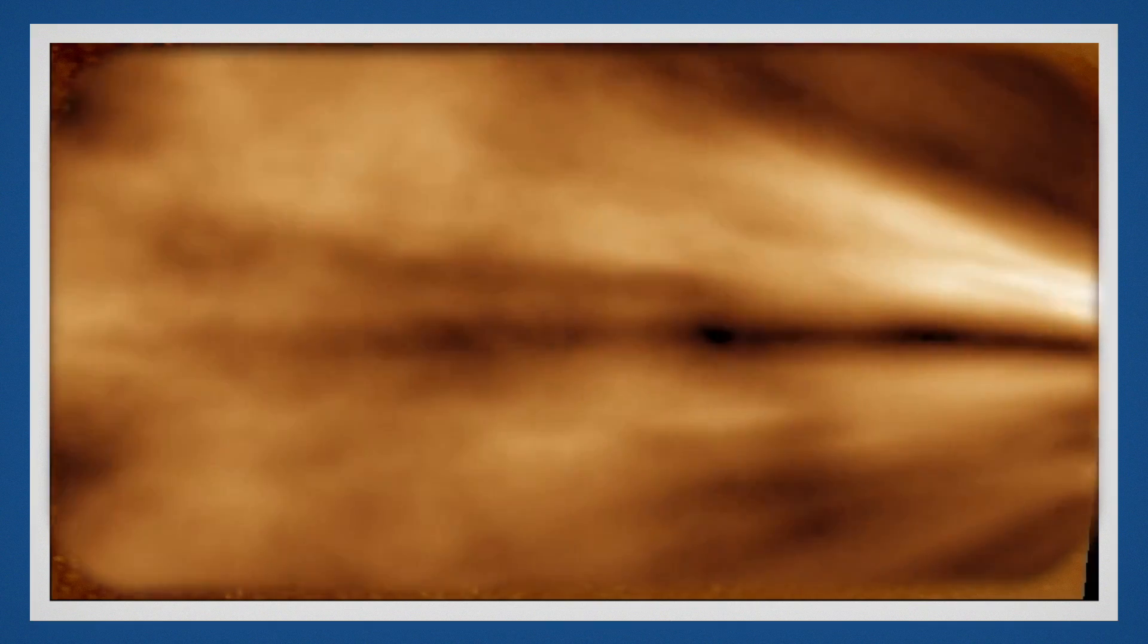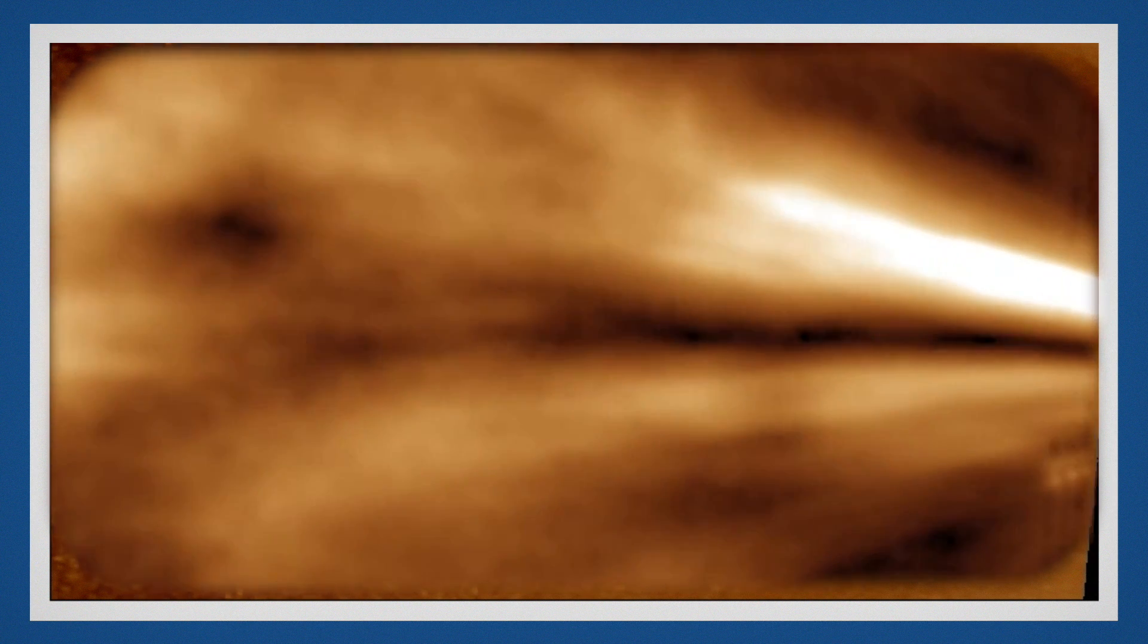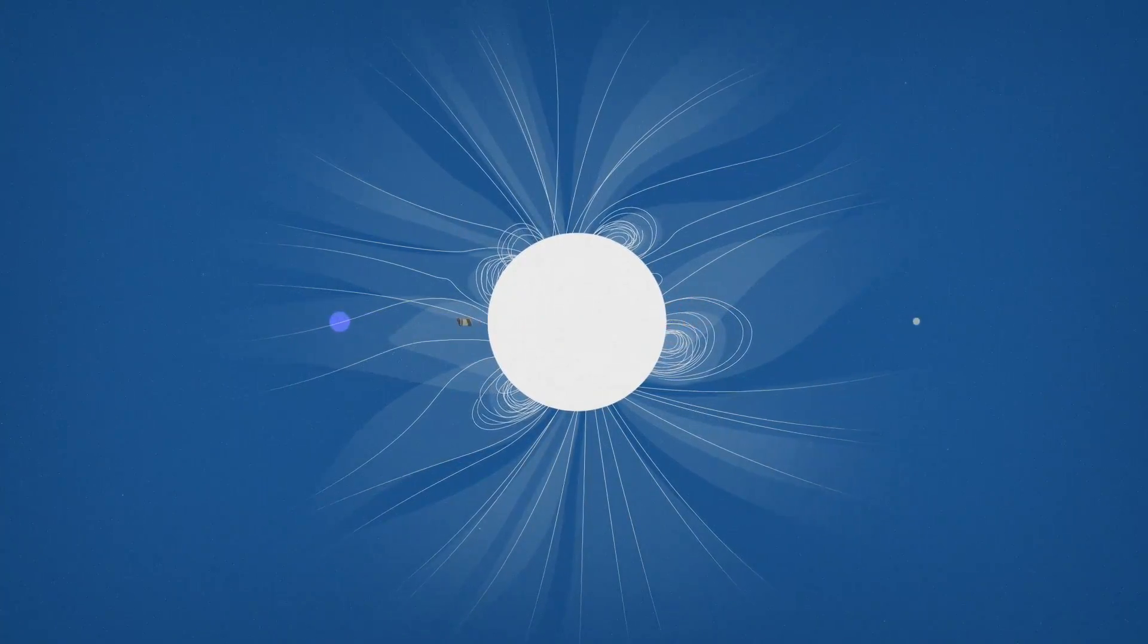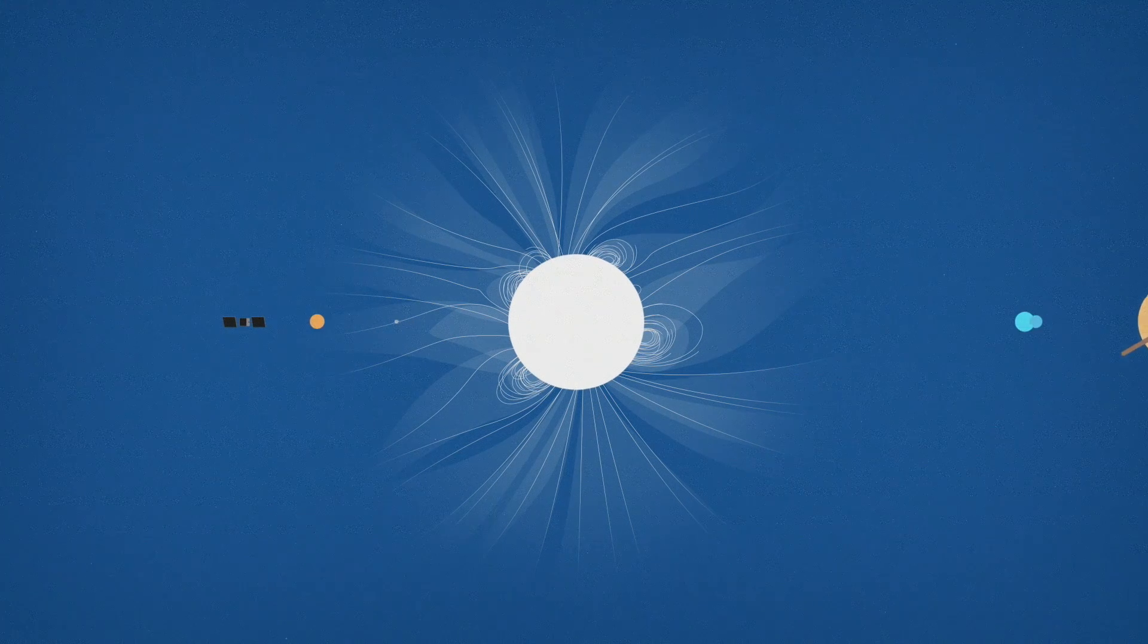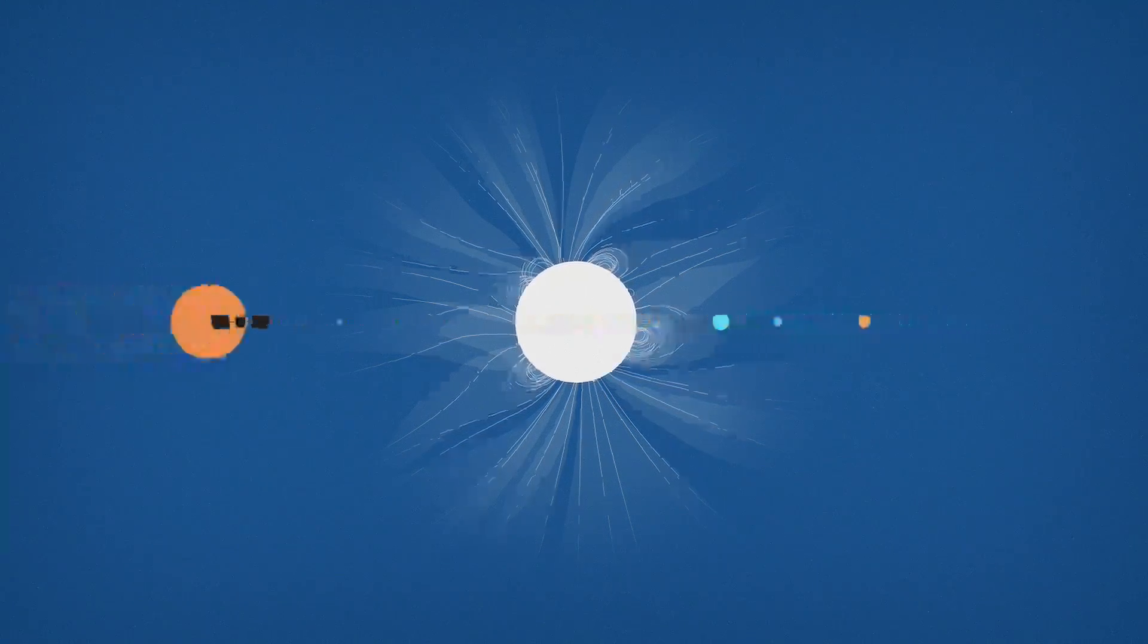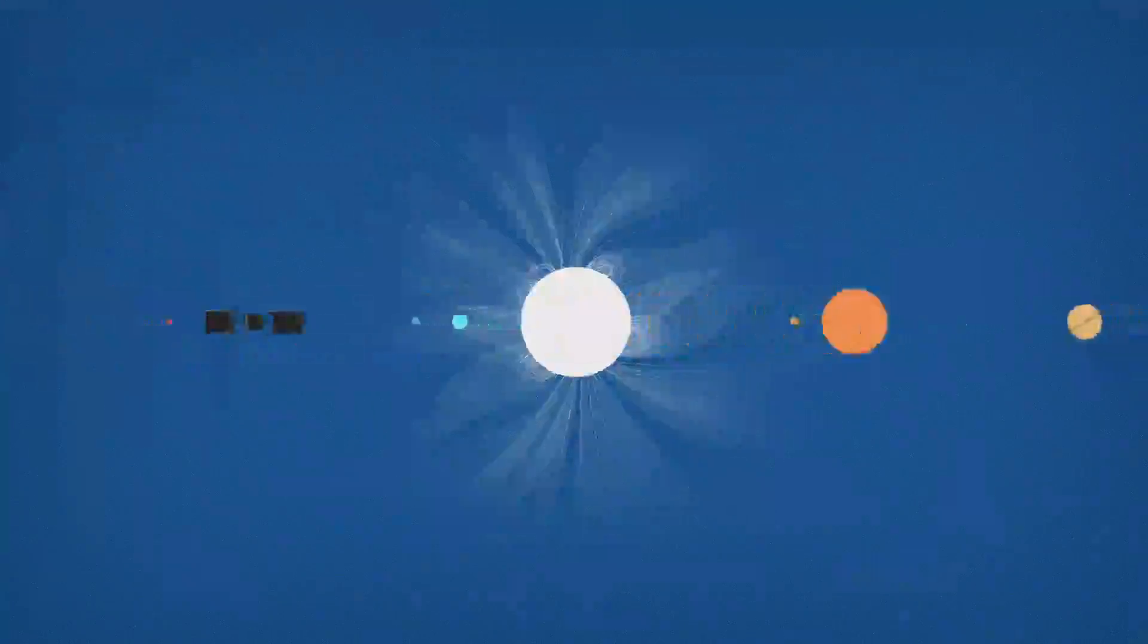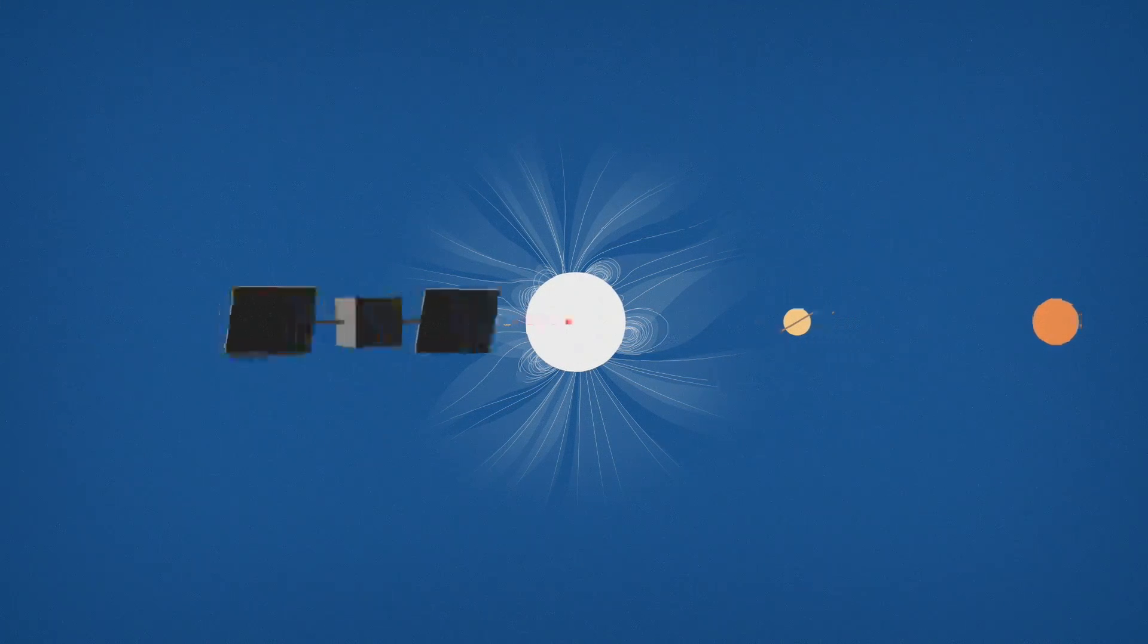These are the first movies of the solar wind itself in a previously unmapped region. Helping us understand what's flowing from the Sun through the space around our planet and out to the edges of our solar system. Crucial information as we continue to explore.